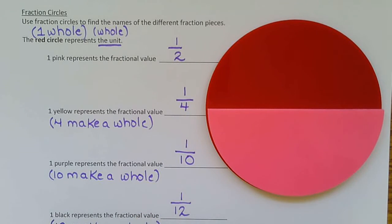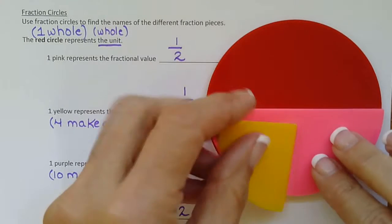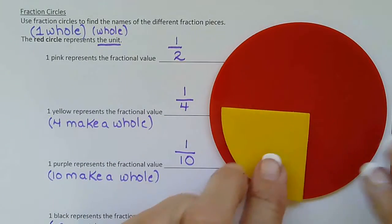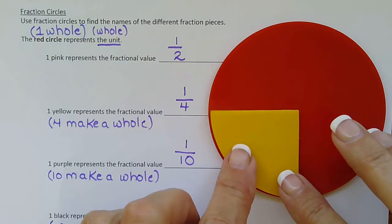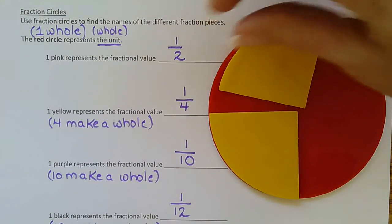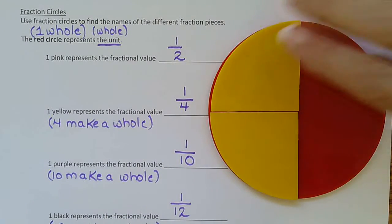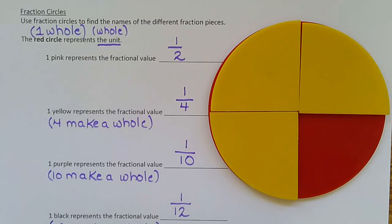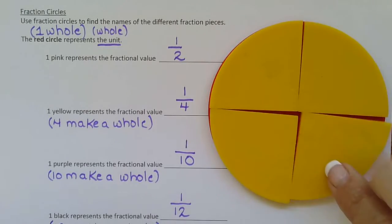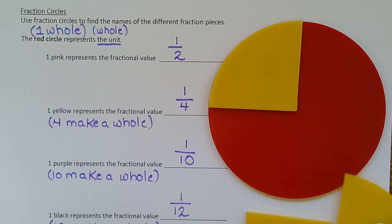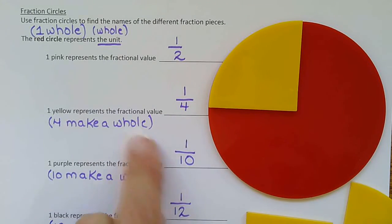Next we do yellow. So we're looking at the red. What part of the red, we'll get rid of this pink just to make it easier to see. So what part of the red is yellow? Well if we put all the yellows in, we see that four yellows make a whole. Therefore that means that one yellow is one fourth of the whole. So four yellows make a whole. Therefore one yellow is one fourth. Because four make a whole.